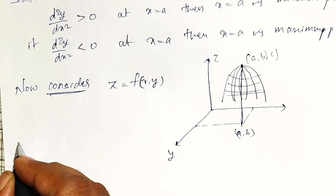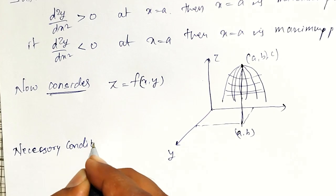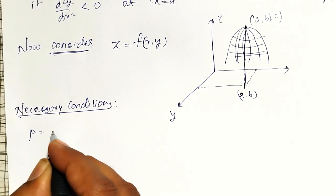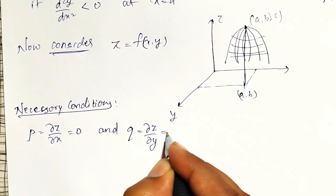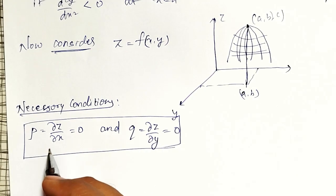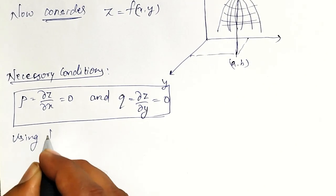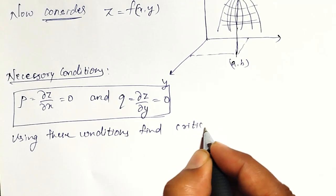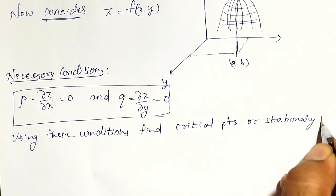What are the necessary conditions to check whether z equal to f of x y has a maximum point or minimum point? The necessary conditions for maximum and minimum are: we must find the partial derivatives — let p equal to dou z by dou x equal to zero, and q equal to dou z by dou y equal to zero. We use these two conditions to find out the critical points, also called stationary points.